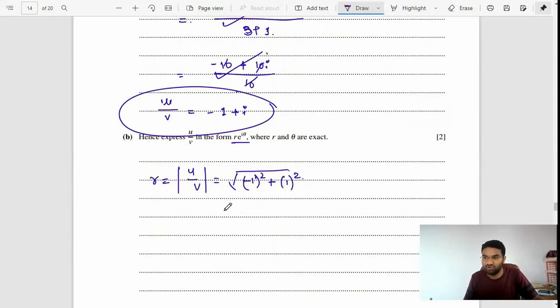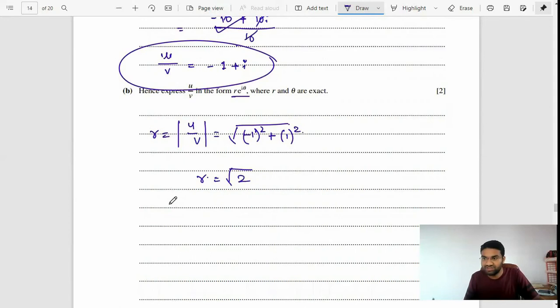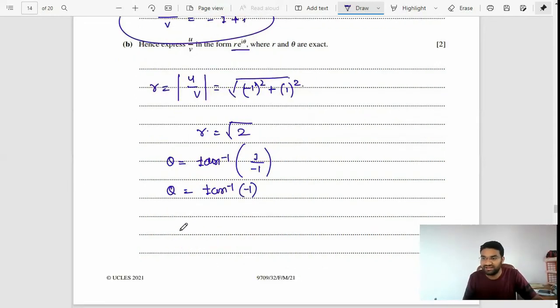Negative 1 squared plus 1 squared is root 2, so r is root 2. Theta is tan inverse of the i coefficient over the constant, which is tan inverse of 1 over negative 1, giving tan inverse of negative 1. When you get a negative value, theta equals 135 degrees.